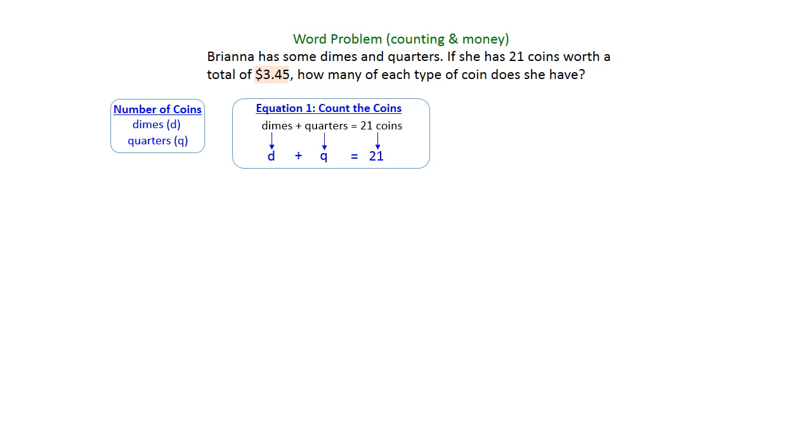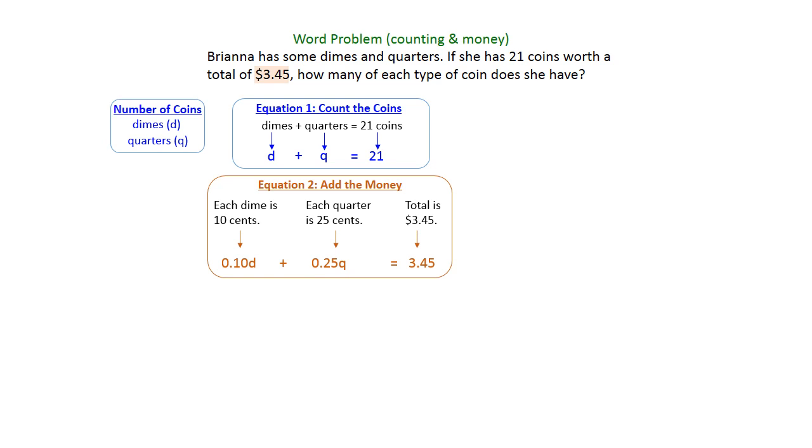The other piece of information that they've given us is that the total is $3.45. So the second equation is going to add your money, and you're going to think, what's the worth of each dime? It's 10 cents, so you're going to put 0.10D. A quarter is 25 cents, so you're going to put plus 0.25Q, and your total money is $3.45.